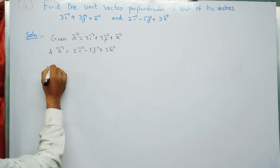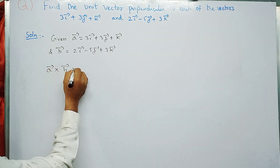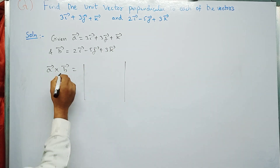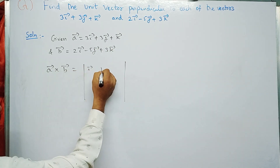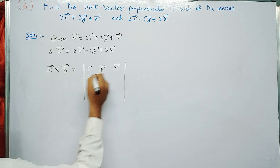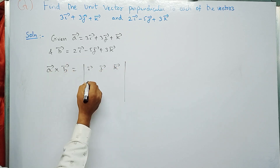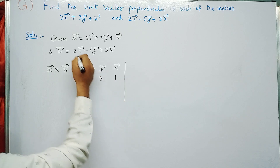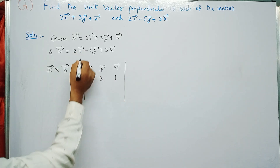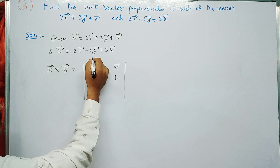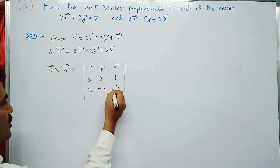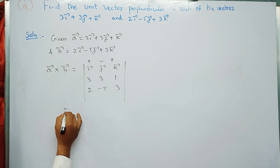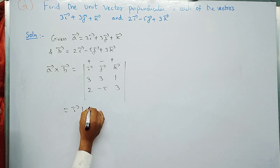From this we find a-bar cross b-bar using a 3×3 determinant. The first row is i-bar, j-bar, k-bar. The second row contains the components of a-bar: 3, 3, 1. The third row contains the components of b-bar: 2, -5, 3. The sign pattern is plus, minus, plus.